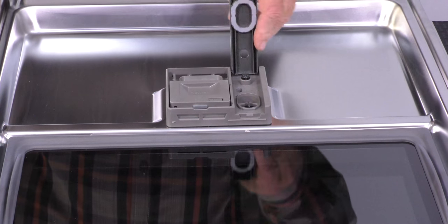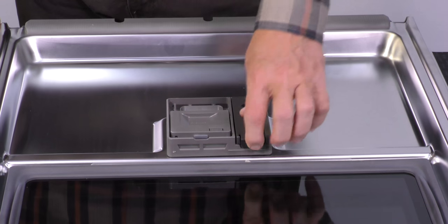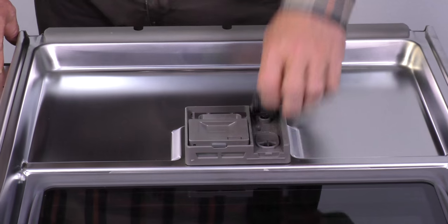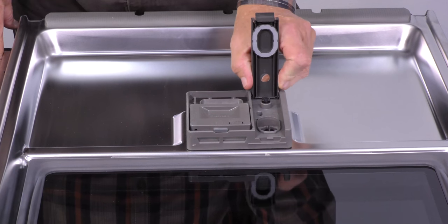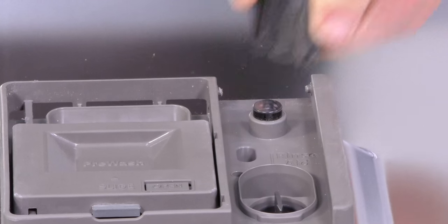At times, your rinse-aid dispenser lid may fall off or break due to certain conditions. To replace it, it's really simple. Just squeeze and twist it.